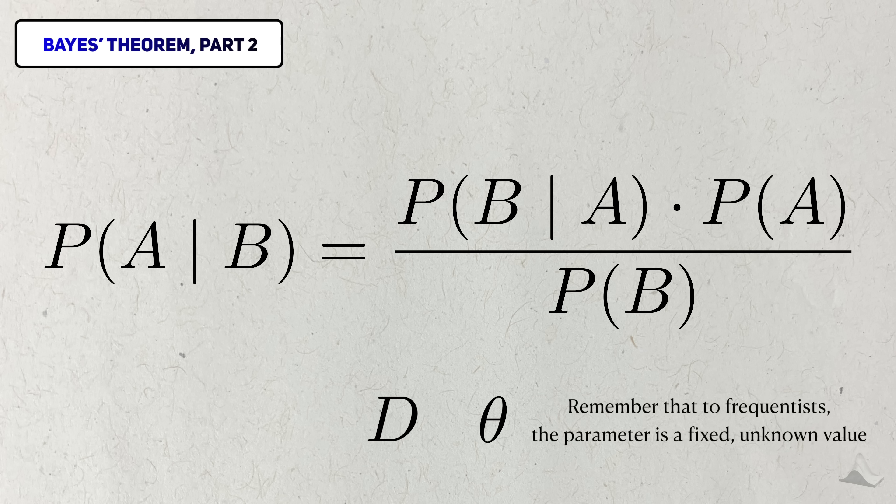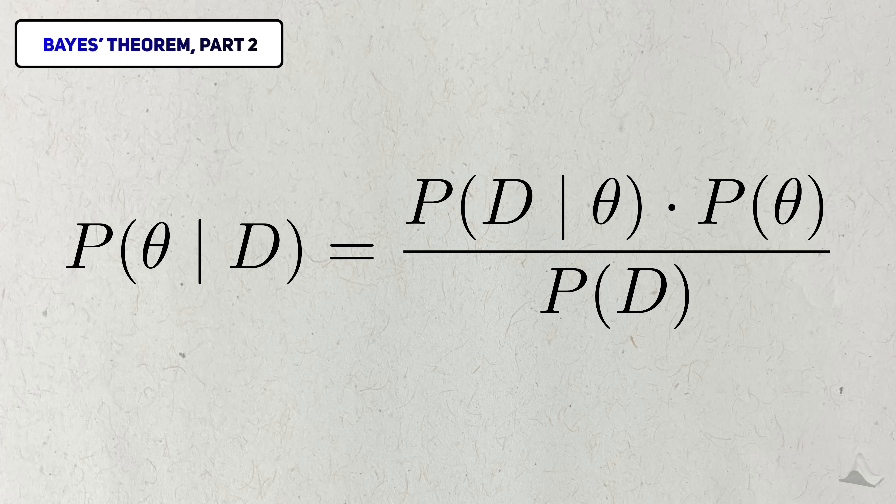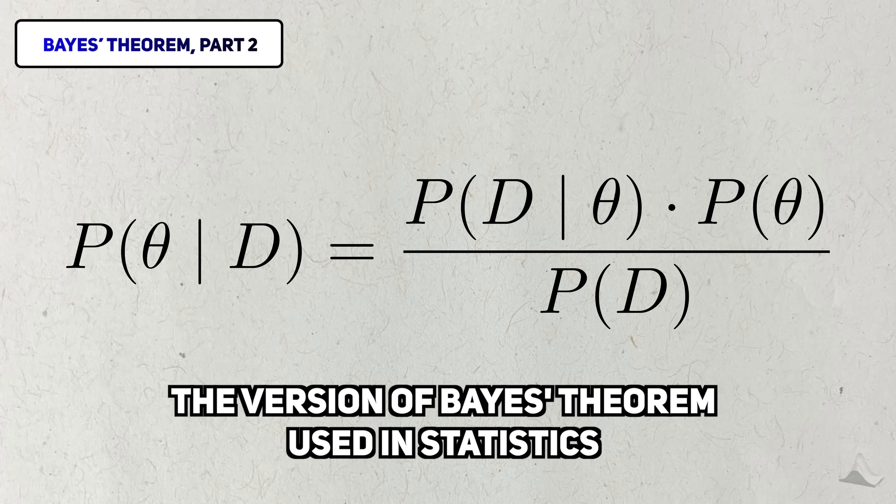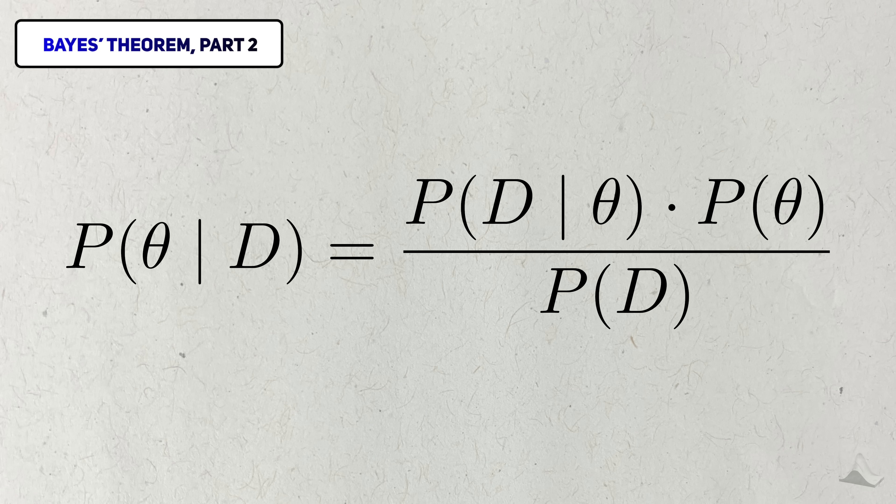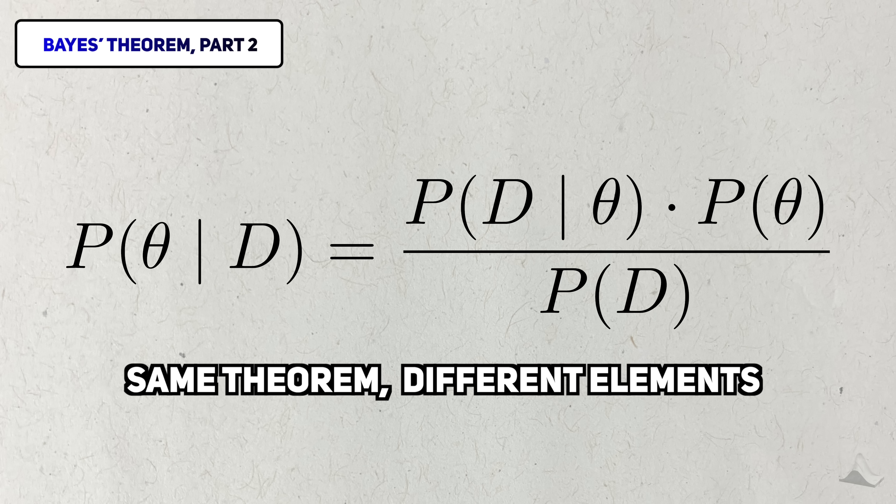This is very different from the frequencies view, where the parameter is thought to be fixed. After replacing these simple events with these two random variables, we get the version of Bayes' theorem that's used in Bayesian statistics. It's the same theorem, but the level of difficulty has increased. Let's walk through it.